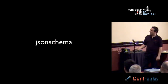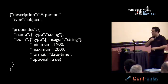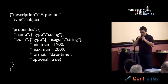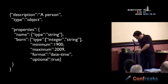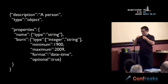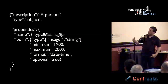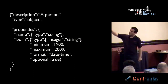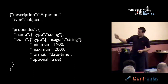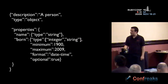JSON Schema is another thing also by Chris Zip — he's quite the thinker and prolific with standard proposals. This lets me declare that I have a person that's an object — it has these properties: the person's name is a string, there's a birth date with some mins and maxes. We can use an integer if you want Unix time or maybe a string, and the format we're expecting is datetime. It's also optional — if you don't want to tell me how old you are, I'm not going to push it.